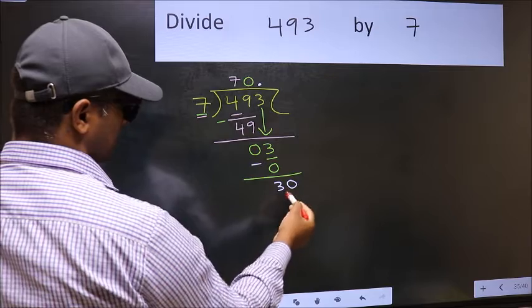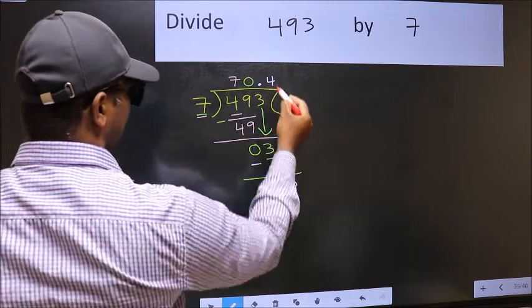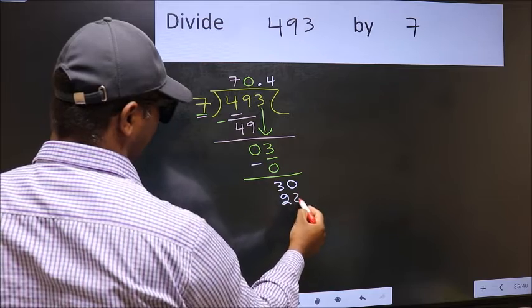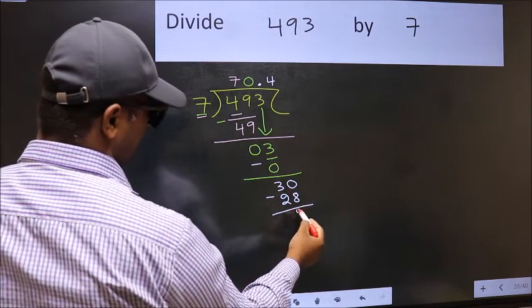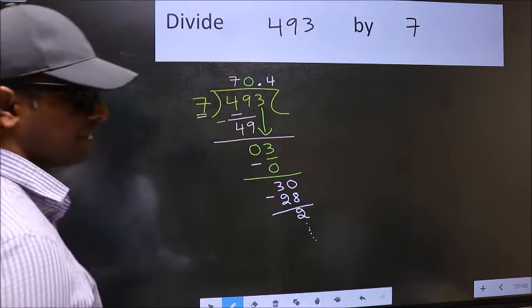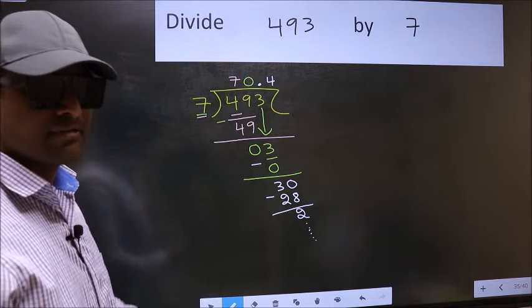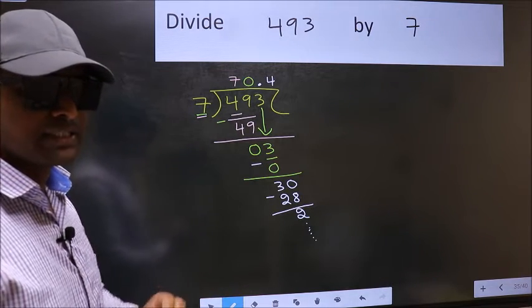So 30. A number close to 30 in the 7 table is 7 fours 28. Now you should subtract. We get 2 and continue the division. I am not doing that. Did you understand where the mistake happens? You should not make that mistake.